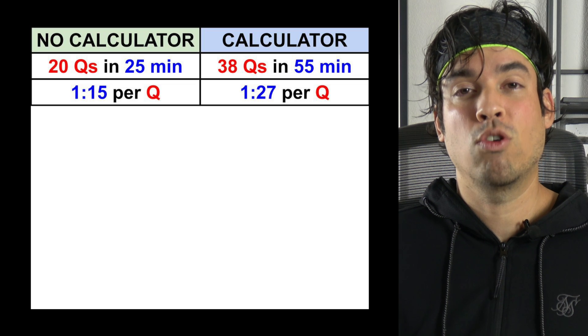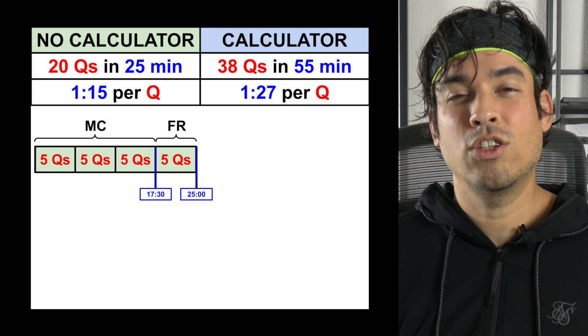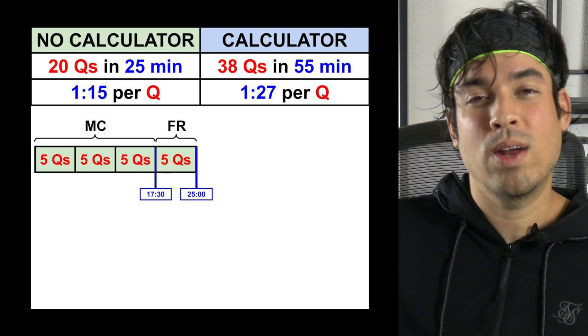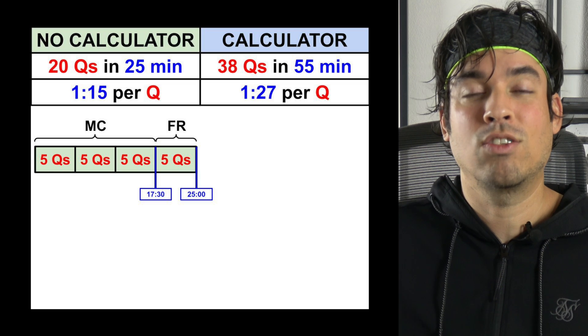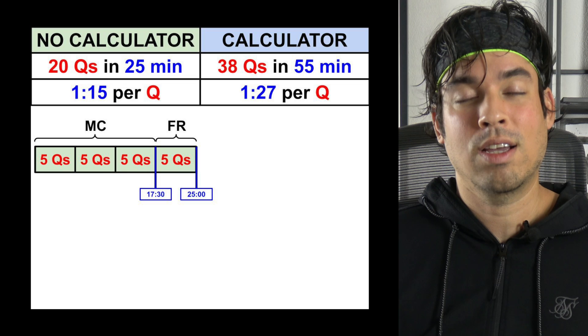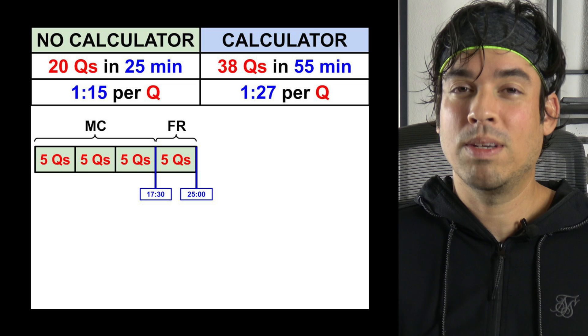As a result we're going to keep it super simple in terms of our approach and where we want to be time wise per question. For the no calculator section I'm going to recommend that you get to the end of the multiple choice by around 17 and a half minutes, and that's usually question 15 is where that ends. Then you have a nice little chunk of time to finish that free response.